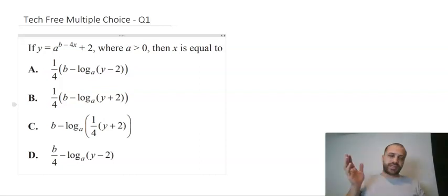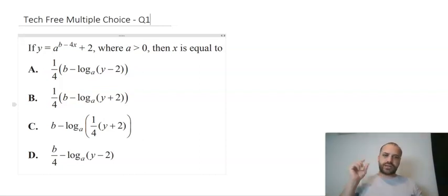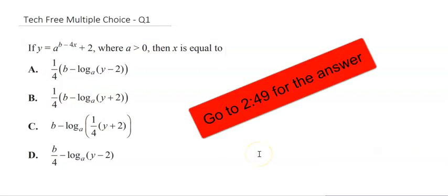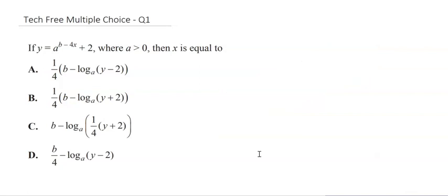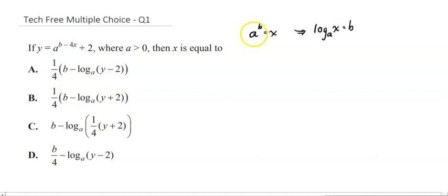I'm going to start solving this in three, two, one. Here we go. So somehow we've got to move from this form here which looks pretty exponential, to a form that looks more like this which is logarithmic. We need to know how to convert from one to the other — the conversion is: a to the b equals x can be converted into logarithmic form: log base a of x equals b.